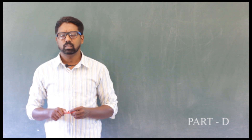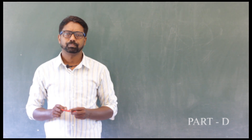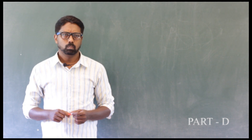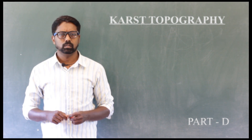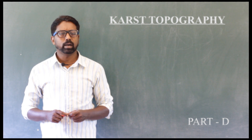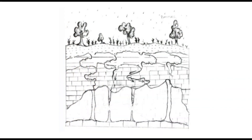Let us see how this takes place. These are the landforms created by underground water. Rocks like limestone easily dissolve in rainwater which percolates to form underground water. Hence the erosional and depositional landforms of underground water are mainly confined to limestone regions. Such landform features are generally called karst topography.